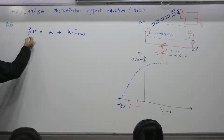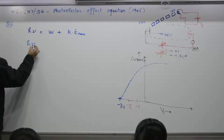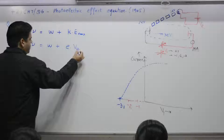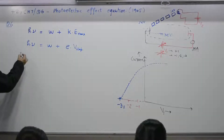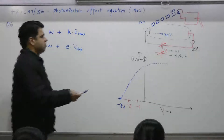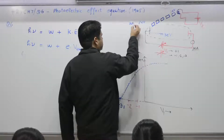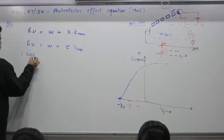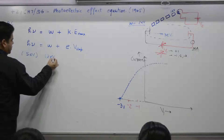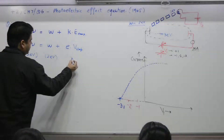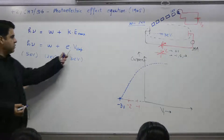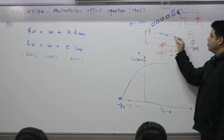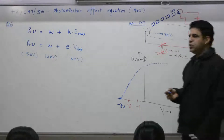Say this photon has 5 units of energy. Then h·ν = work function + e·V_stopping. As an example: this photon is 5 electron volts, work function is 2 electron volts, so this value is 3 electron volts. So the stopping potential is minus 3 volts — you need −3V to oppose the electron and reduce the current to zero.